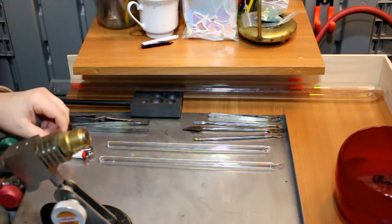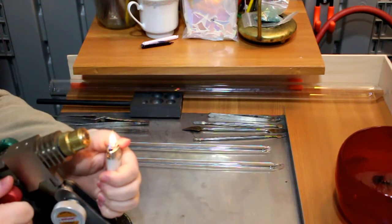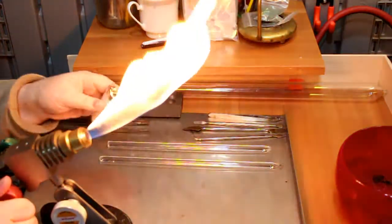All right, so start out we light our torch, propane first, and then you slowly add oxygen to get the perfect flame.